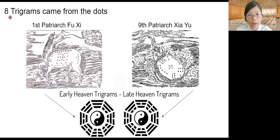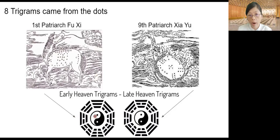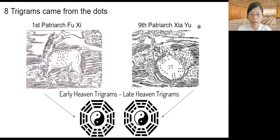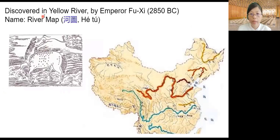The eight trigrams actually come from dots. There is a number behind each trigram. The early heaven trigrams originated from the horse marking — the discovery of the first Patriarch, Fuxi. The later heaven trigrams originated from the marking on the turtle — a divine discovery from the ninth Patriarch, Xia Yu. Today's session will focus on the horse marking.